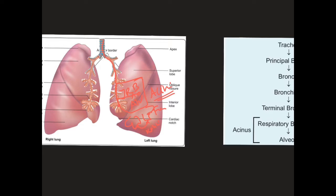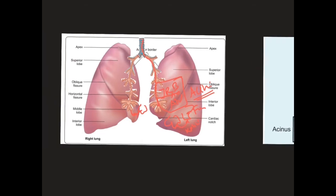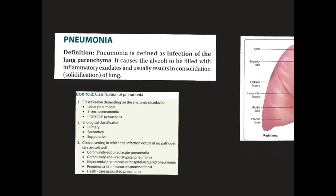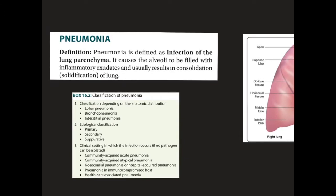This communication is very important because infection from one acinus can go to another acinus through the pores of Kohn. Primarily these pores serve other purposes, but infection is the secondary thing that travels from one acinus to the other.